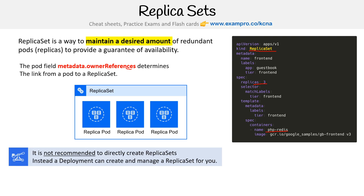It is not recommended to directly create replica sets. You can, but instead a deployment can create and manage replica sets for you. The idea here is that if you launch a replica set and then delete it, it's gone. But if you delete a replica set managed by a deployment, the deployment will say the replica set is gone and spin up another one.